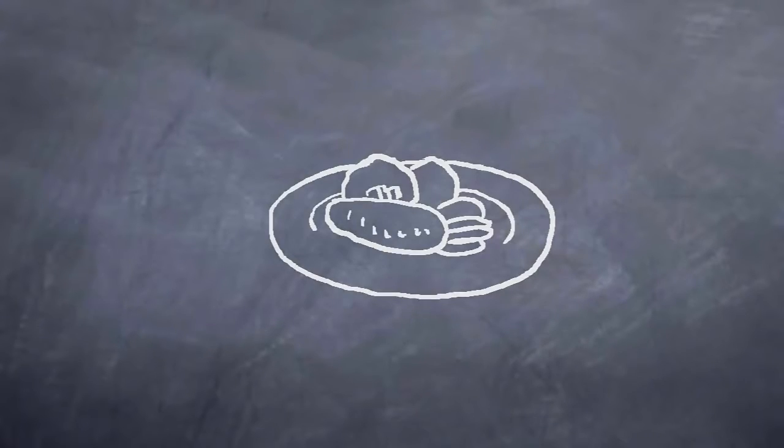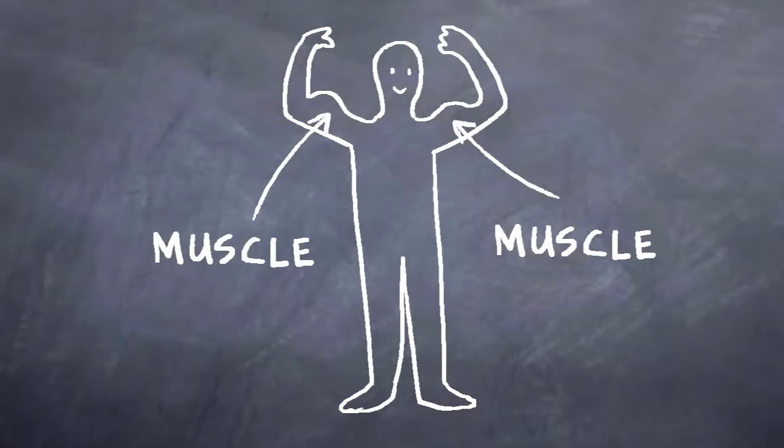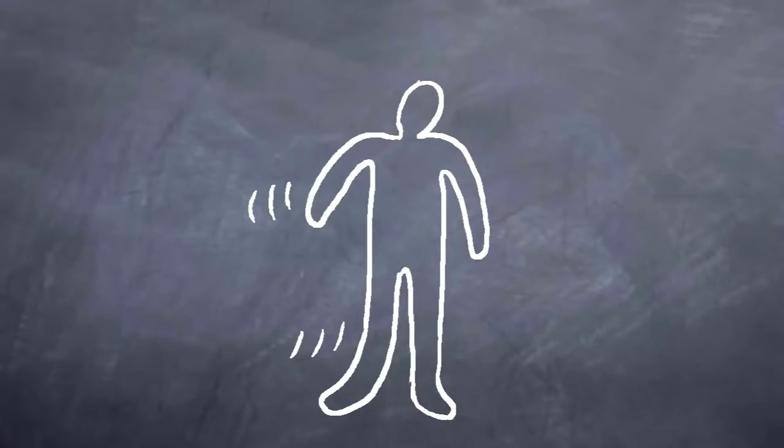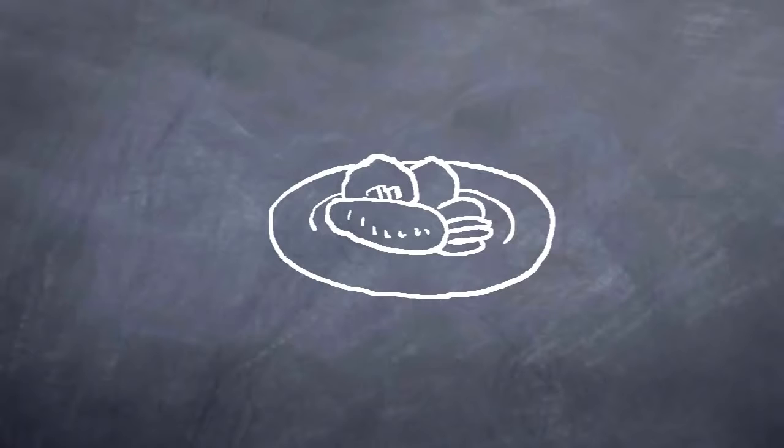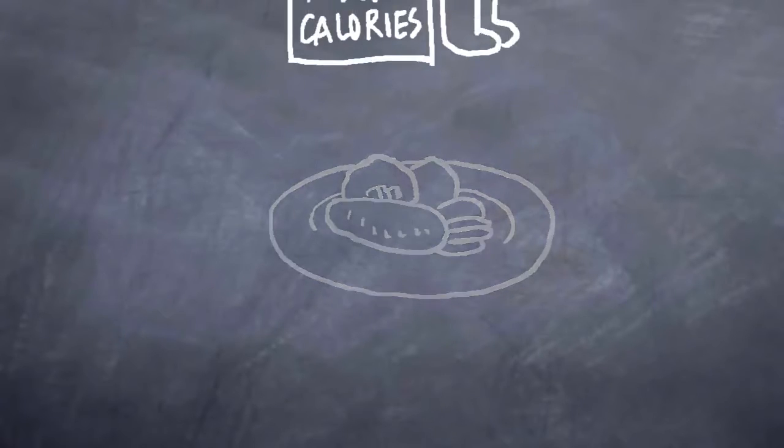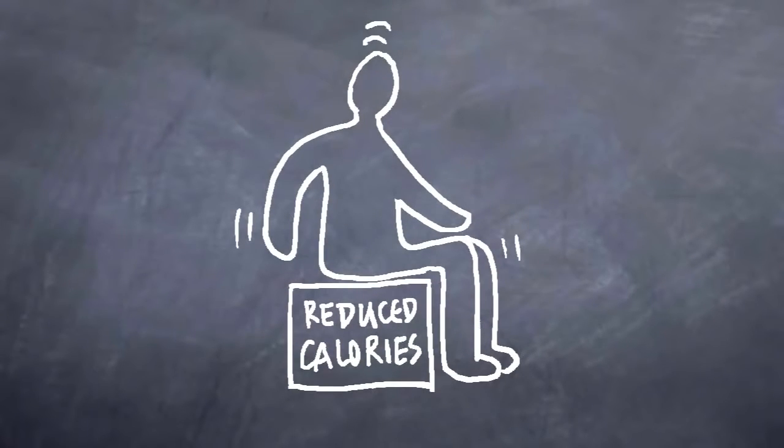So, eating less drives the body to break down muscle, which means we are losing weight, but in the long term, losing muscle makes maintaining weight loss really difficult. After a while, burning muscle as energy and eating less on a low calorie diet, the body's metabolism slows down.